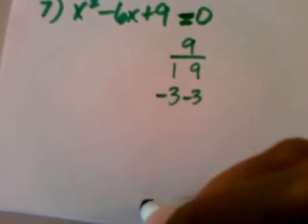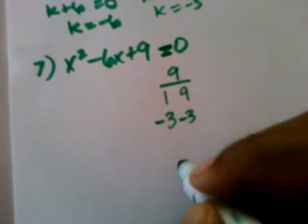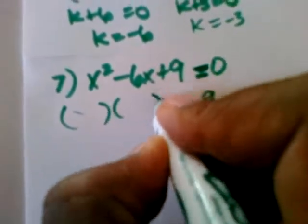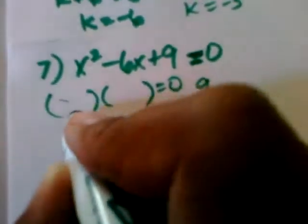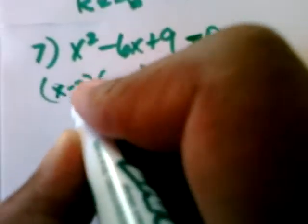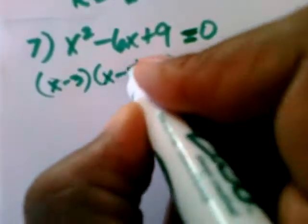Now, I need a negative 6. So what I'm going to do is make both of these negative. Now, if I add both of those together, then I will get a negative 6. And so I'm going to put those into the factor, into the grouping symbols.